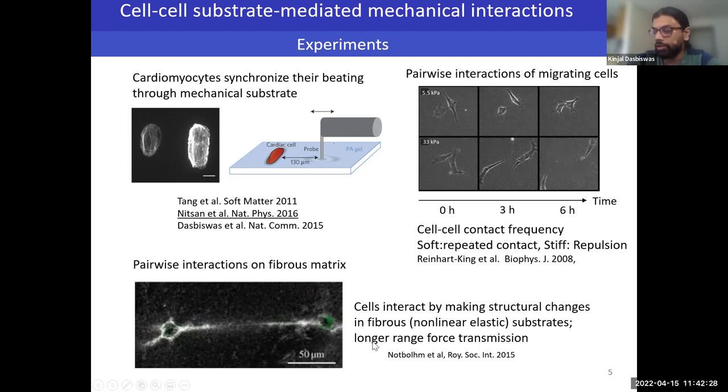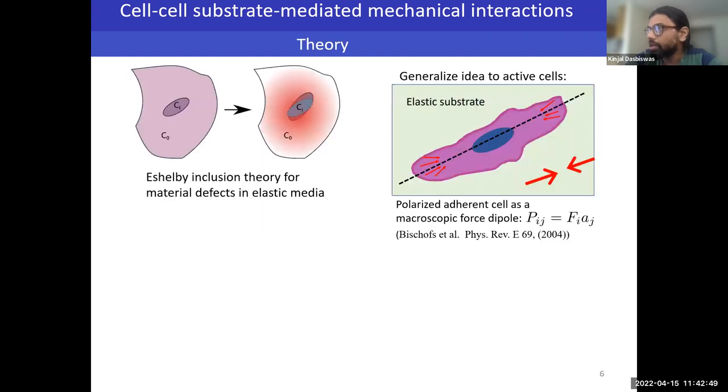In such nonlinear matrices, you can in fact have longer range force transmission than linear substrates. All these experiments show you that between two cells that are not directly in contact, they can still communicate with each other mechanically and either get attracted or repel depending on the circumstances.